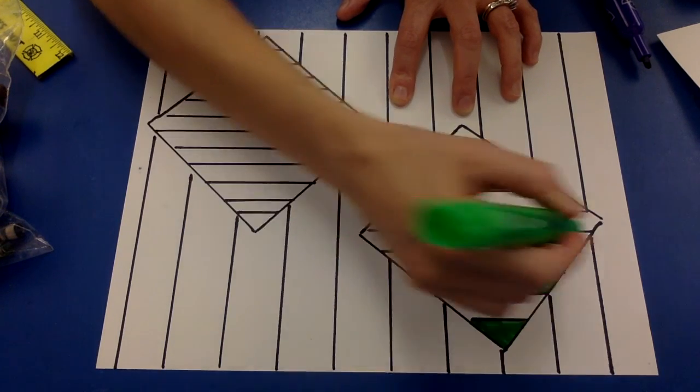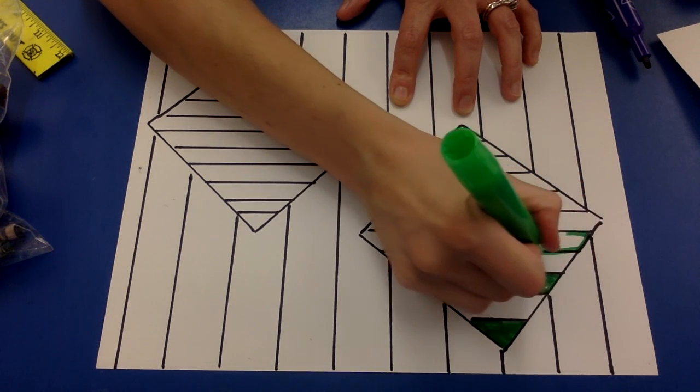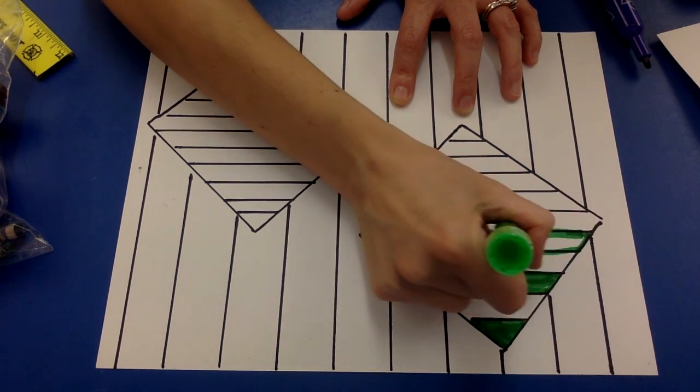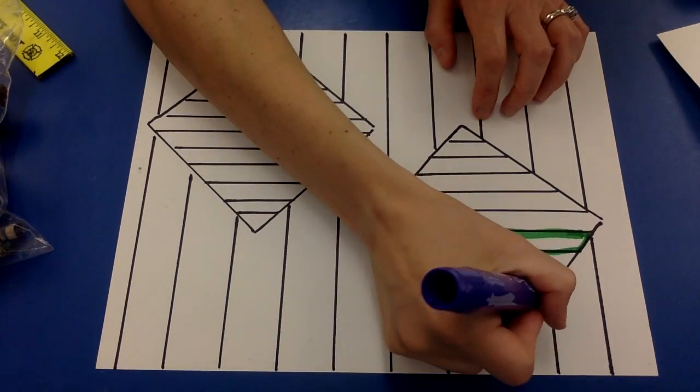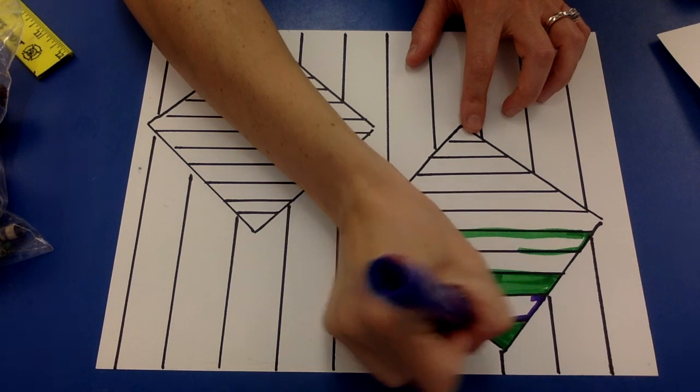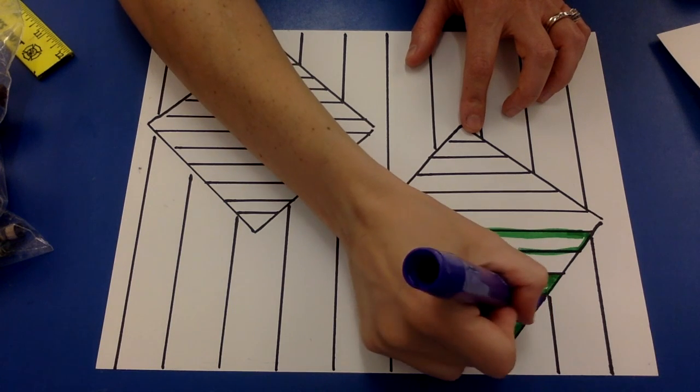Okay, so I'll do all of my greens and then I'll do my purples. Let's pretend I'm done with my greens. Then I would go in with my purples and I would do this the same way in my other diamond.